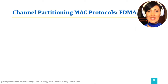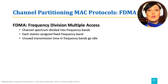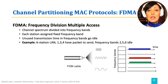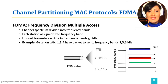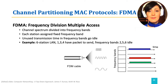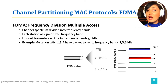In Frequency Division Multiple Access, the channel is divided into frequency bands, and each frequency band is assigned to a user. For example, in the figure, the frequency band of the channel is divided into 6 smaller frequency bands and assigned to users. Three of the frequency bands — 1, 3, and 4 — are used by the assigned users as they have packets to send. And 3 frequency bands — 2, 5, and 6 — are not used in the figure, as the assigned users do not have packets to send.